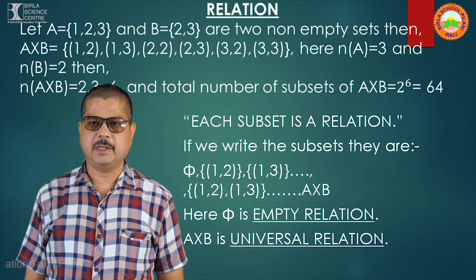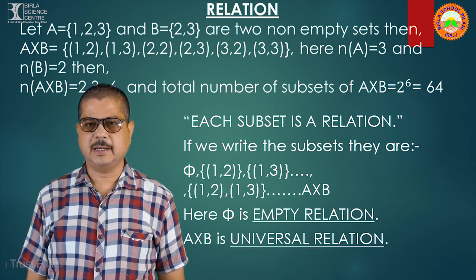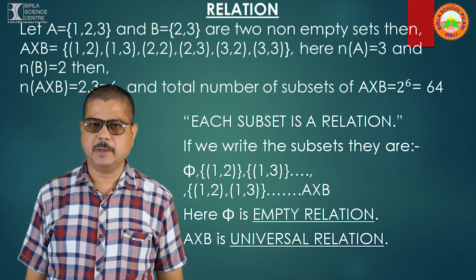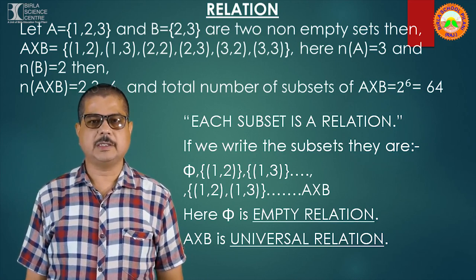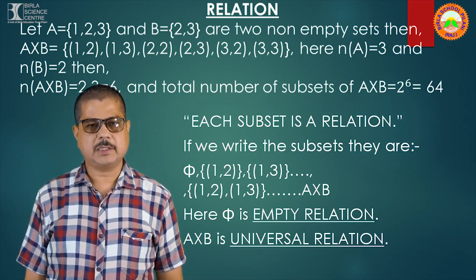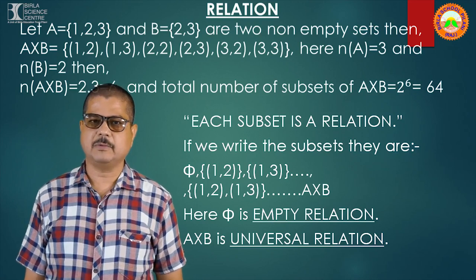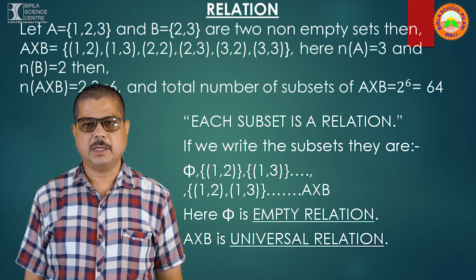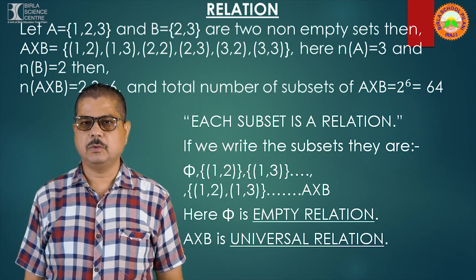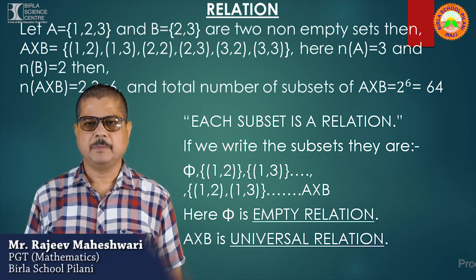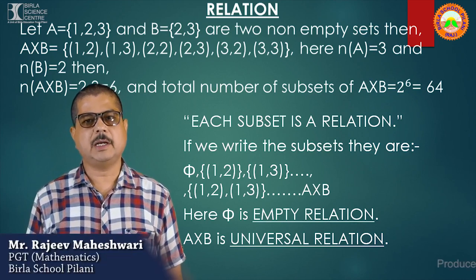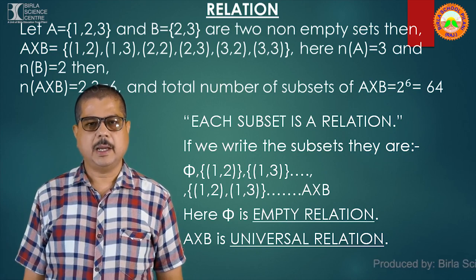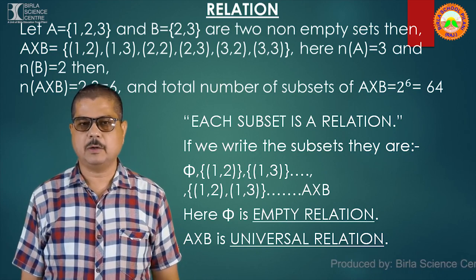These are two non-empty sets. Then Cartesian product A×B is given by the set of ordered pairs in which the first element is from set A and the second from set B. That is, A×B = {(1,2), (1,3), (2,2), (2,3), (3,2), (3,3)}. Here we see that the number of elements in A are 3 and the number of elements in B are 2.